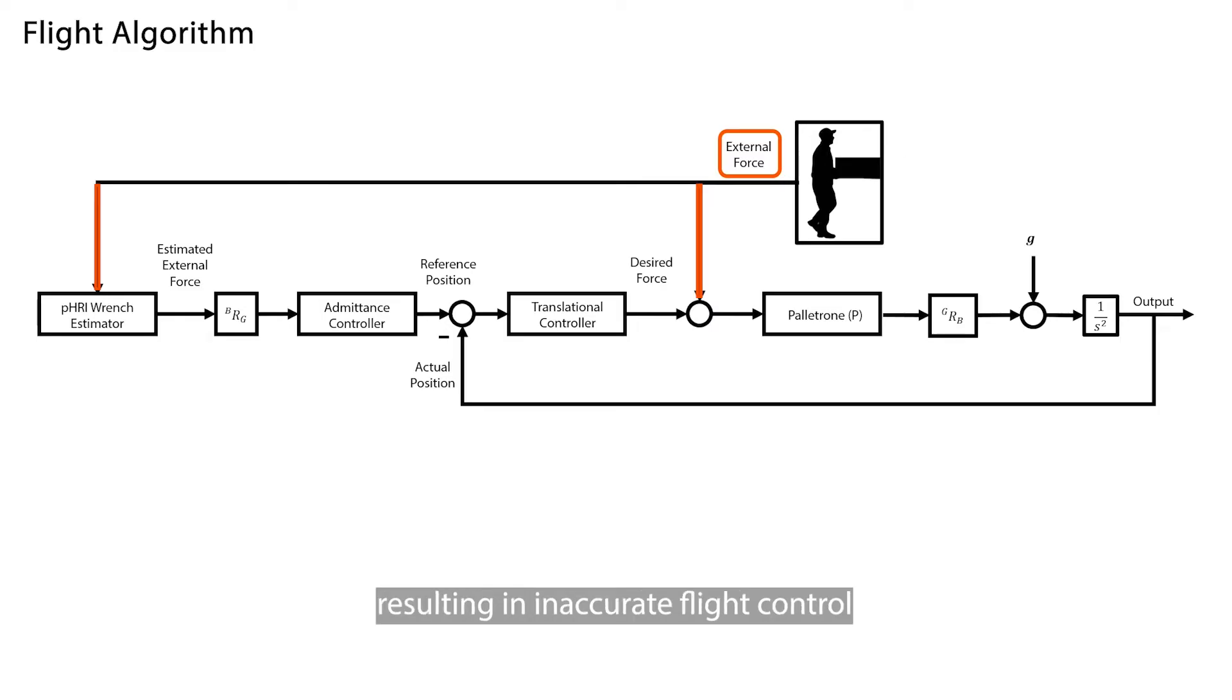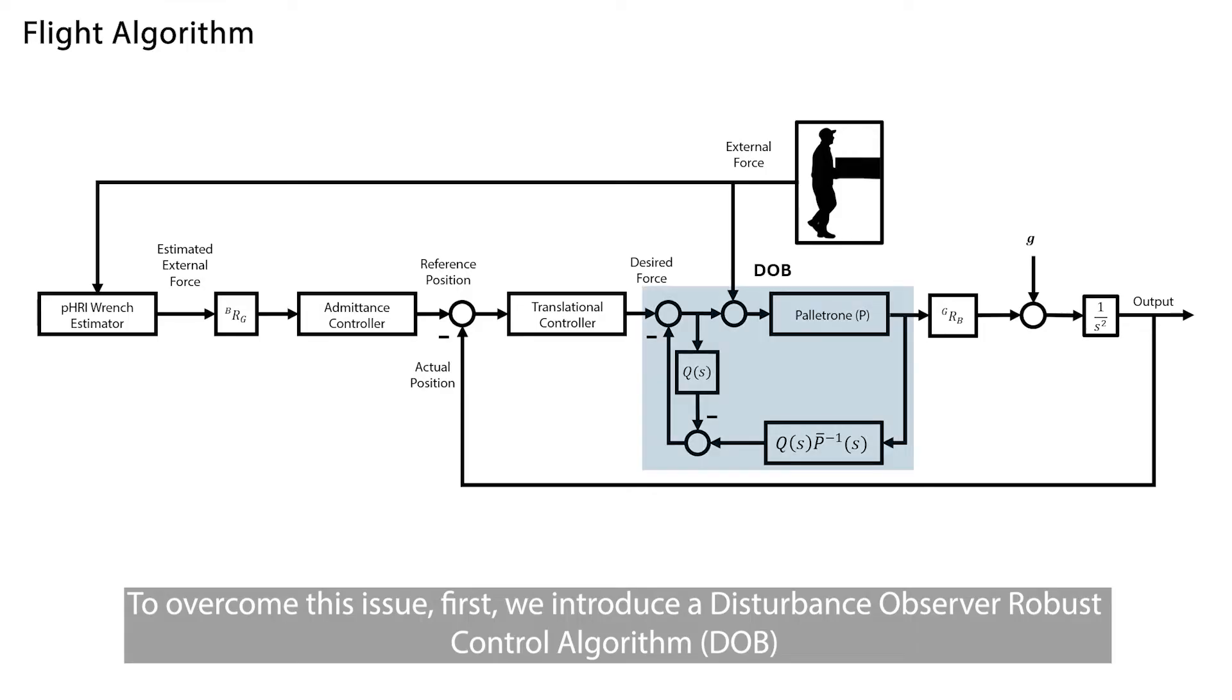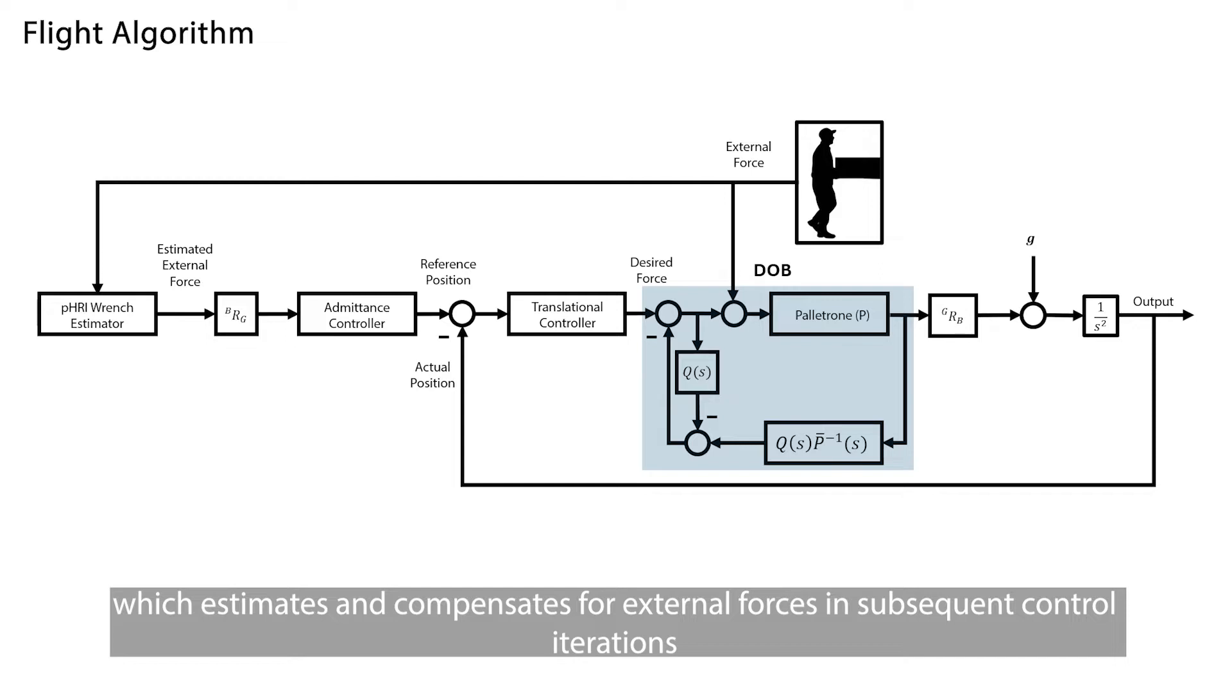Resulting in inaccurate flight control. To overcome this issue, we introduce a disturbance observer robust control algorithm, which estimates and compensates for external forces in subsequent control iterations.